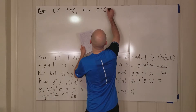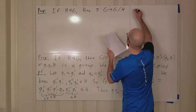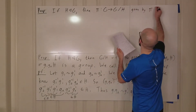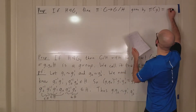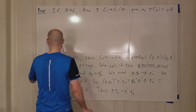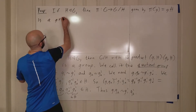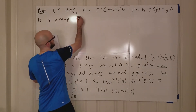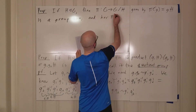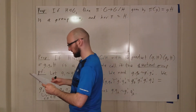The map π goes from G to G mod H, given by π(g) = gH, so it sends an element of G to its coset. This map is a group homomorphism, and the kernel of π is equal to H.